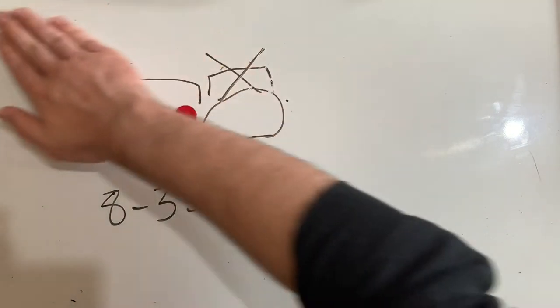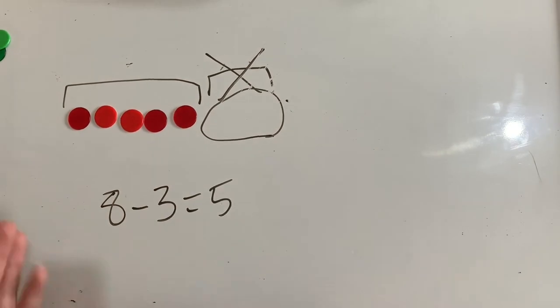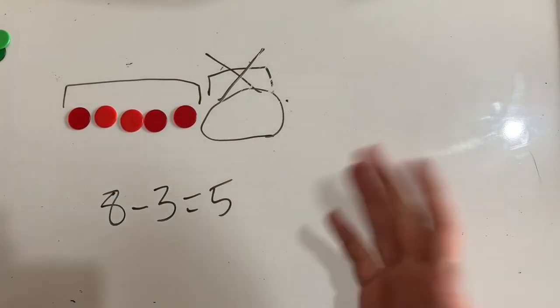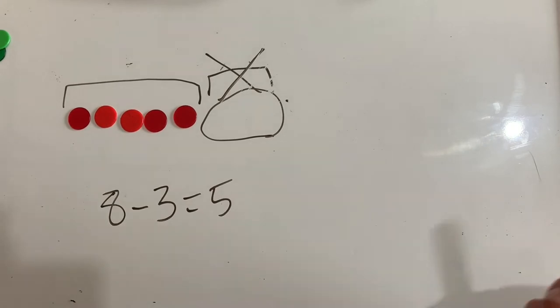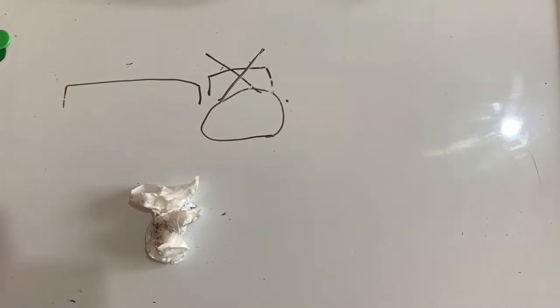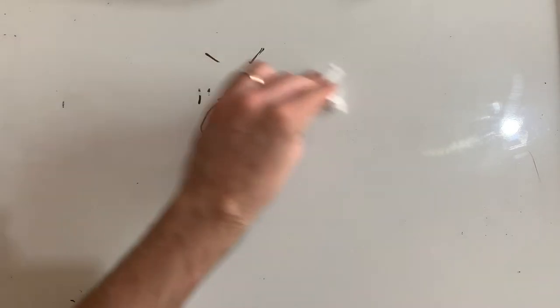We undid what we did to five when we added three by taking three away. That means that subtraction is the opposite operation to addition. And that's what we're going to be focusing on for this video. But it's also important to know that multiplication and division are opposite one another as well.